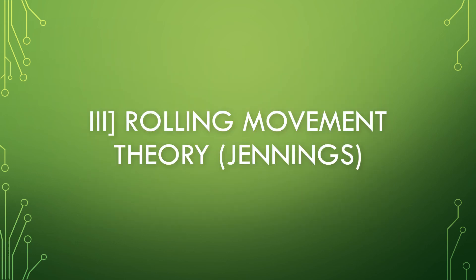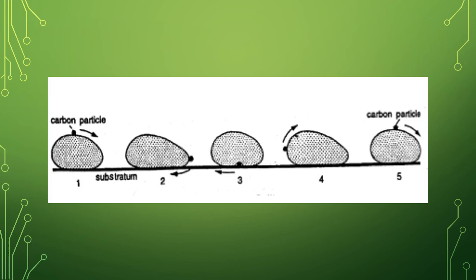Third theory is Rolling Movement Theory, proposed by Jennings. According to this theory, the amoeba moves by the rolling of the body on the substratum. This is brought about by the streaming movement of the cytoplasm. This type of movement is exhibited by the amoeba verrucosa.